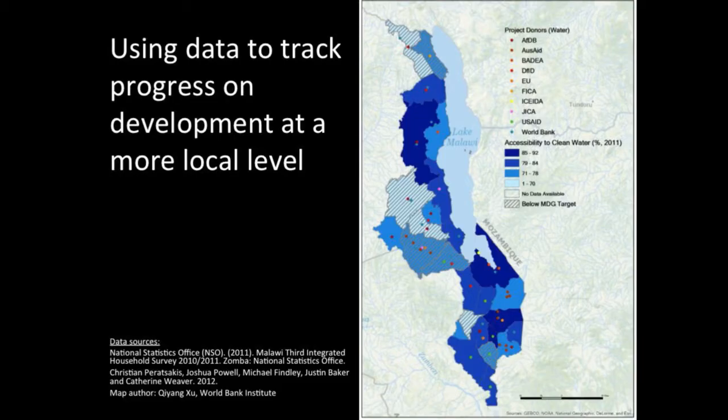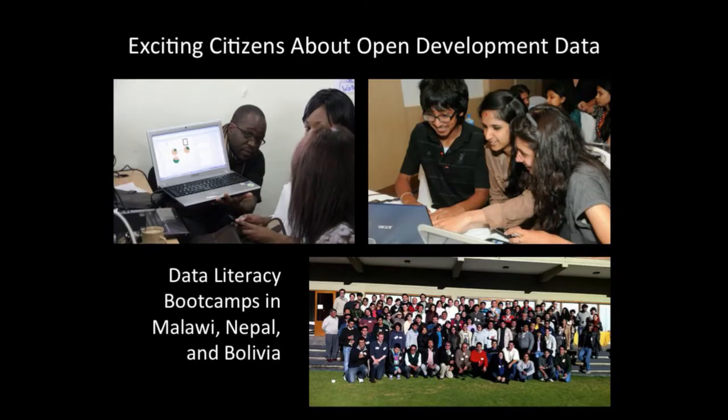You can also track, for example, accessibility to clean water overlaid with the water projects — you can use this data to track progress at a more local level. This is from Malawi. We also try to engage citizens about this data. We did data literacy boot camps in Malawi, Nepal, and Bolivia in June, with around 300 participants from civil society and media trained in how to clean and visualize data. That was very fun.